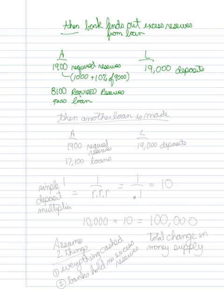Another loan is then made, because I'm going to lend out the $8,100. My assets now equal $1,900 in required reserves and $17,100 in loans, because I've turned all my excess reserves into loans. On the liability side I have $19,000 in deposits. This process keeps going, because now there's an $8,100 loan check that will be deposited, and so on and so forth.